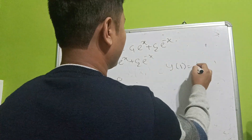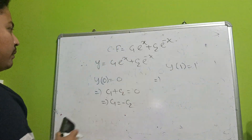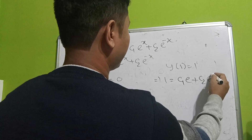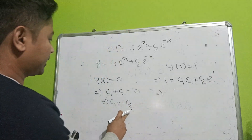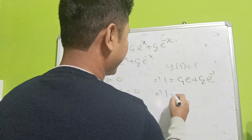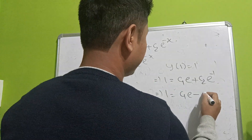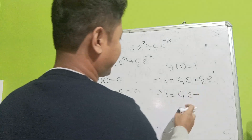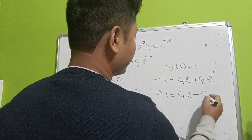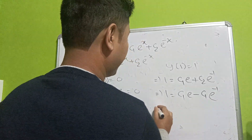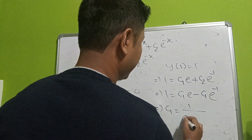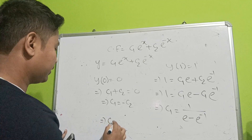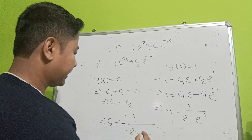Applying the second boundary condition y(1) equal to 1: 1 equals c1 times e plus c2 times e to the power minus 1. Substituting c1 equals minus c2, we get c1 equals 1 by (e minus e to the power minus 1).